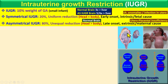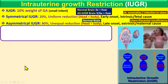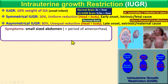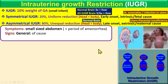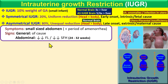The prognosis of asymmetrical IUGR is better compared to symmetrical IUGR. Looking at symptoms, you will see a small uterine size — less than expected for the period of amenorrhea. The signs depend upon the cause: if there is a chromosomal anomaly, you will see those signs, for example trisomies; or signs of infection — depending upon the etiology.